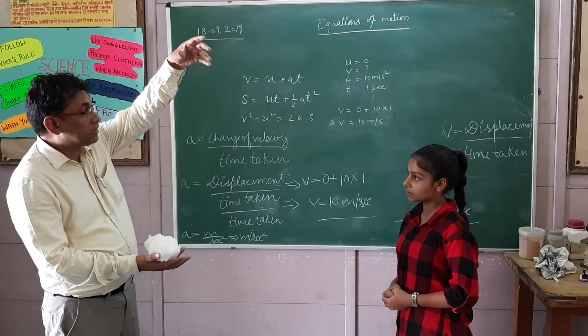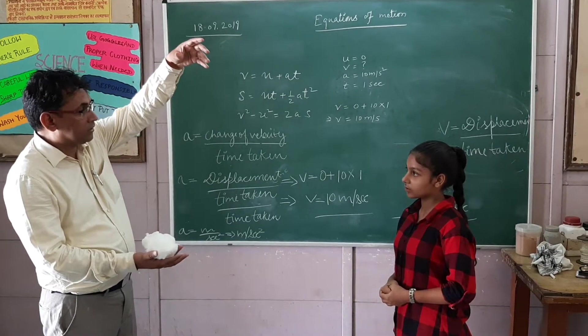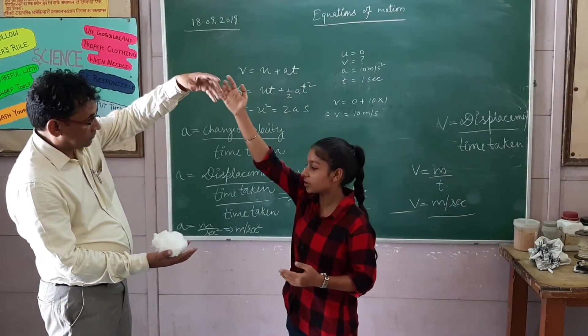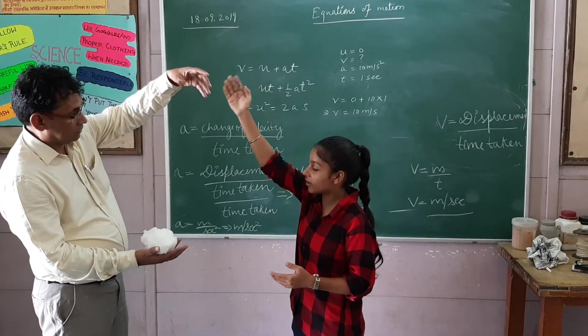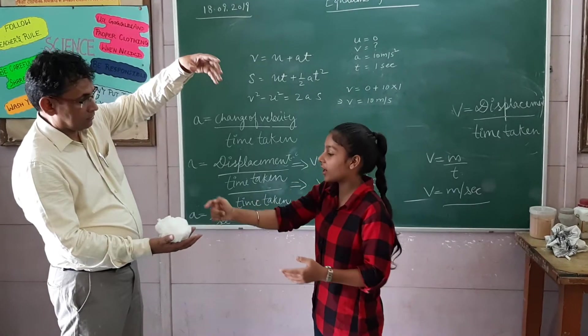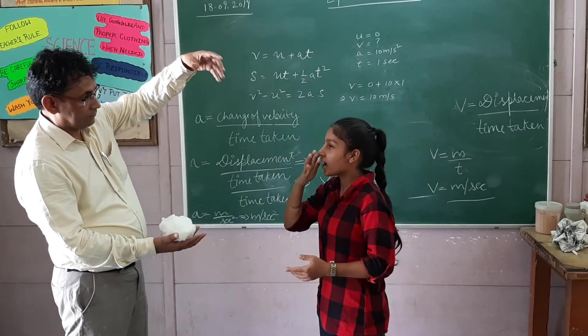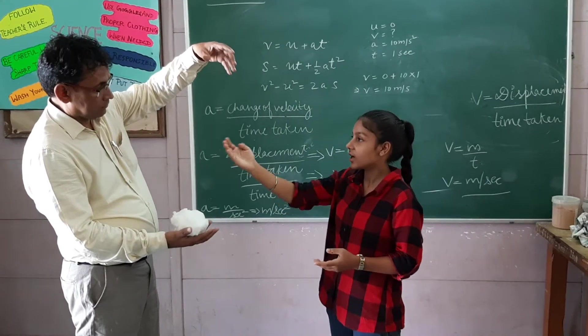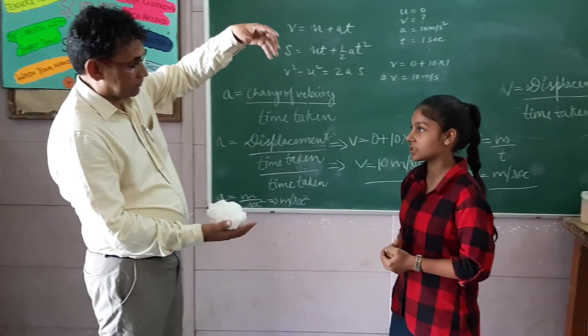Now tell me about initial velocity, final velocity, and acceleration. Initial velocity is zero because the ball is stationary. When we drop the ball, final velocity is there. And acceleration, when we drop a ball, earth attracts due to gravity, and acceleration is 10 meters per second squared.